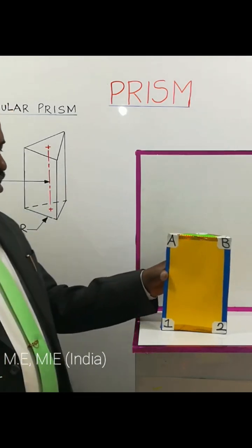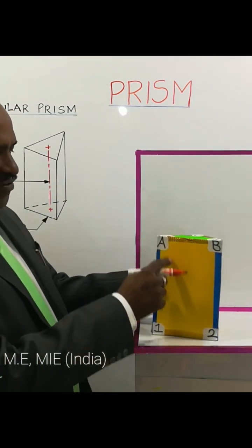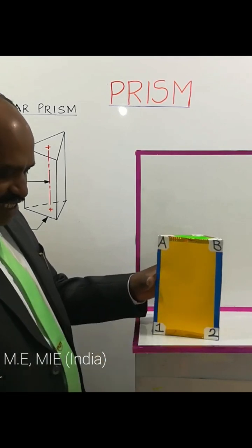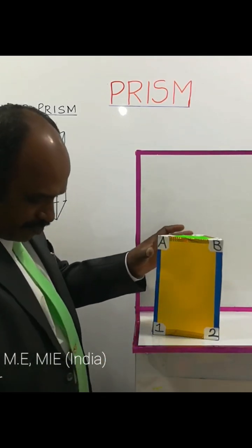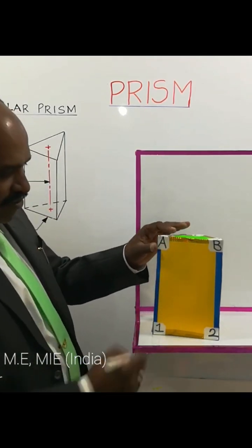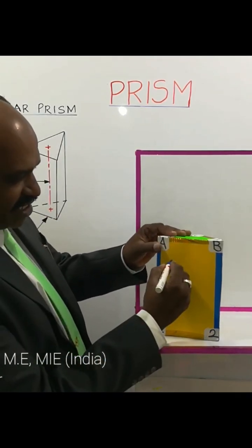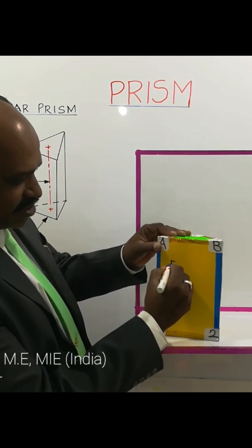And this yellow color is called a face — FACE. So you can see the faces of the triangular prism.